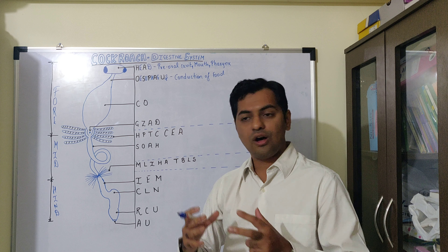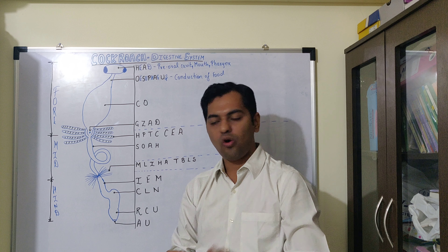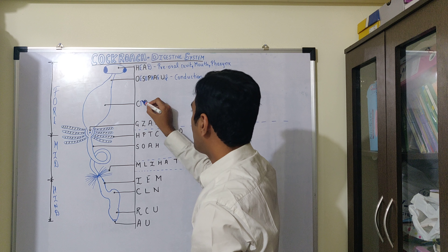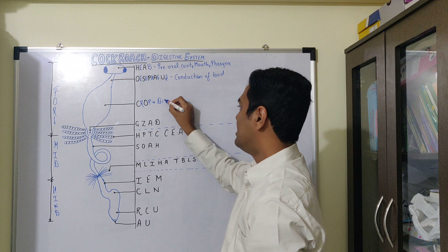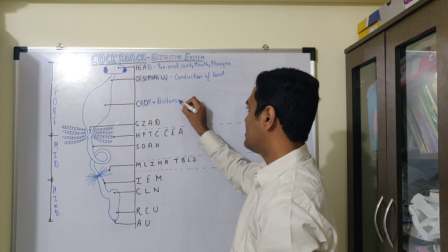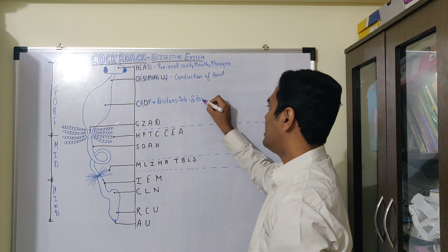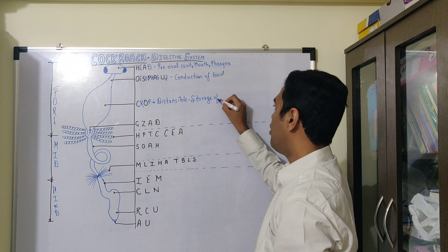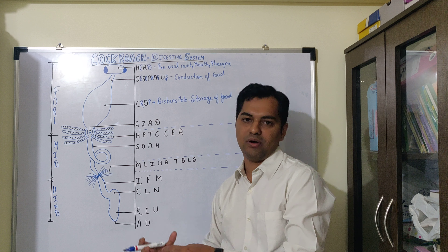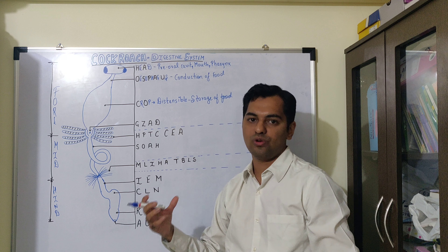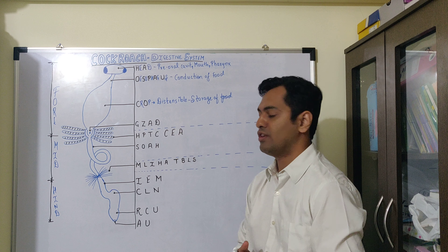The next part is a very dilated, pear-shaped organ which is known as the crop. This crop is highly distensible, meaning it can expand, and its major function is that it helps in storage of food. So in a way it is acting like a stomach where it helps in storage of food, but the structure is known as the crop.